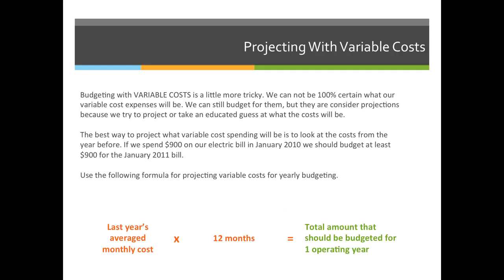We're going to say, well, last year we spent this much, so next year we have to spend at least that much. The best way to project what variable cost spending will be is to look at the cost from the year before. If we spent $900 on our electric bill in January 2010, we should budget at least $900 for January 2011.